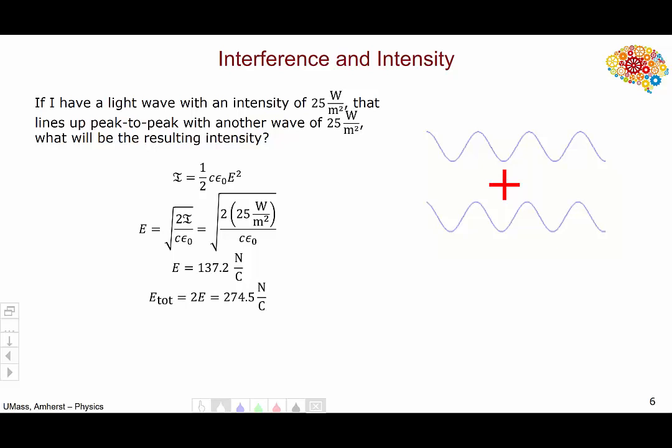Now, I go and add the two waves together. So, since the two waves are identical, the total amplitude will just be double the initial amplitude, 274.5 newtons per coulomb. Now, I go back and recalculate the intensity with this value. Intensity of 100 watts per square meter. So, you'll notice that, in fact, the intensity did not double. It's not 25 plus 25. That would be 50. No, the intensity actually quadrupled, and this should make sense because intensity is related to amplitude squared.